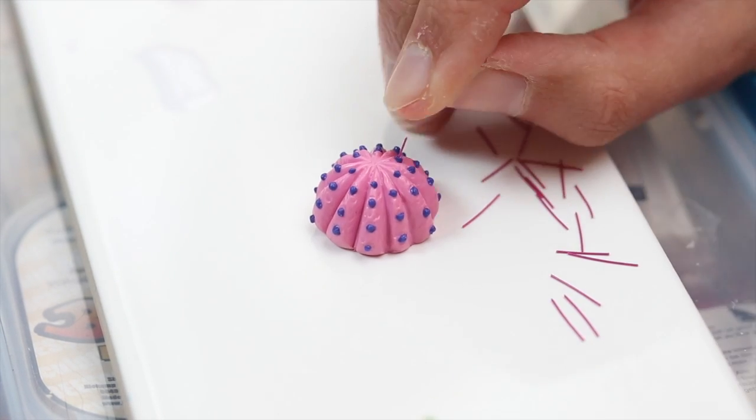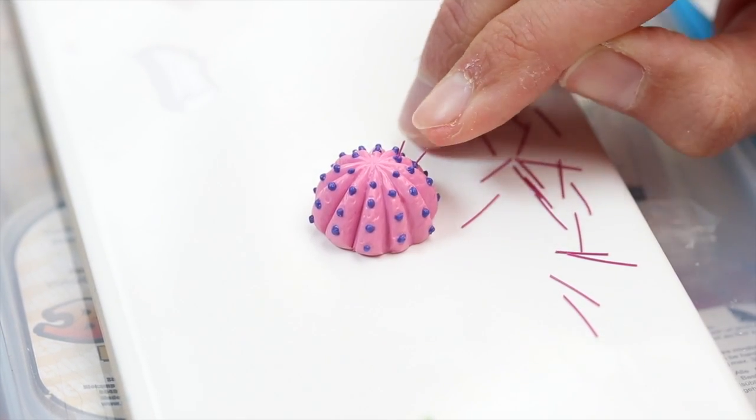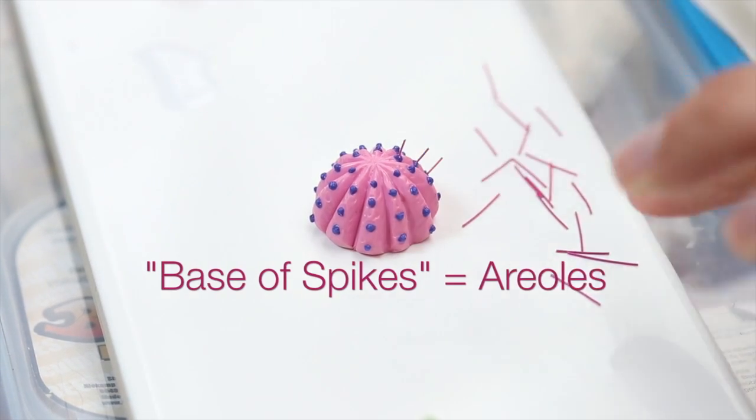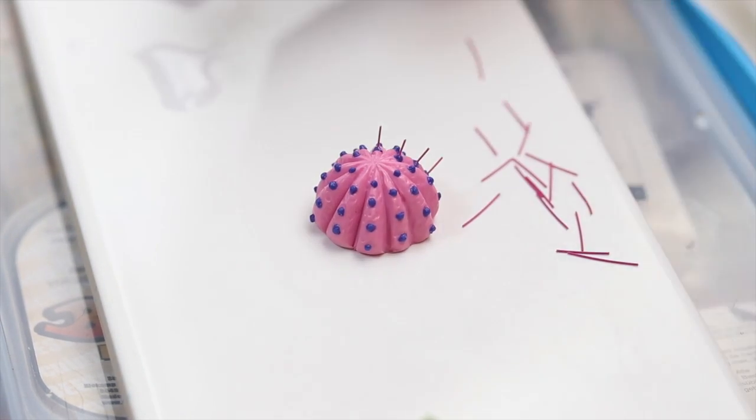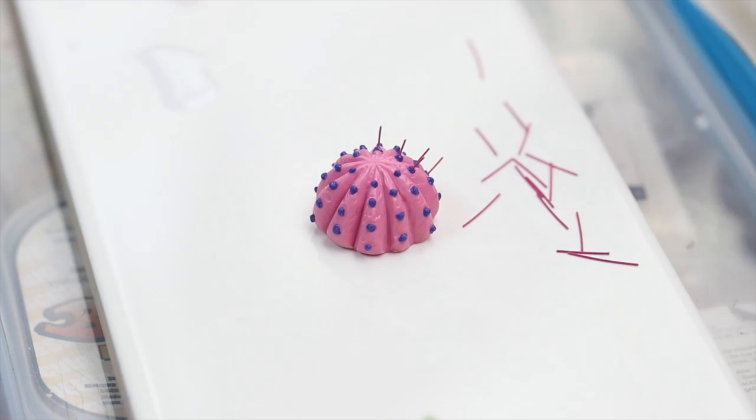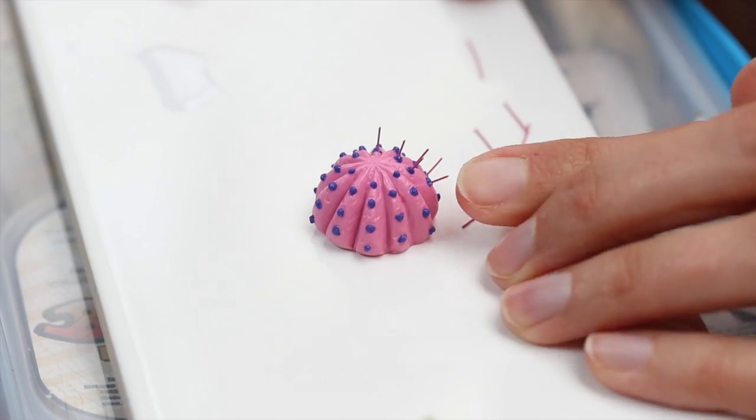And here I'm adding spikes again. This time I added two spikes per spike base. If you look at reference pictures it's usually three to five spikes per base but that's just too much considering the size of it. It just doesn't work out very well.